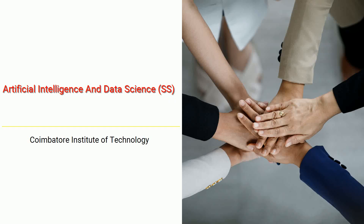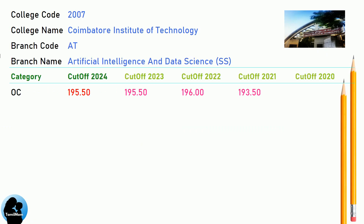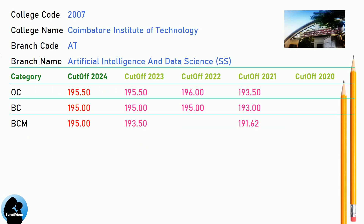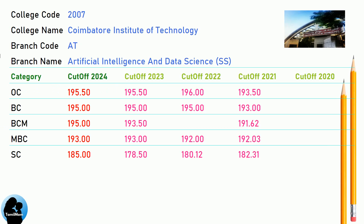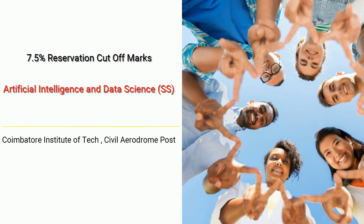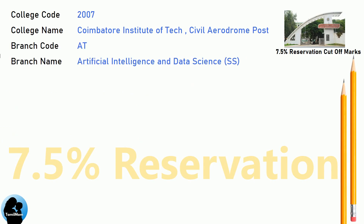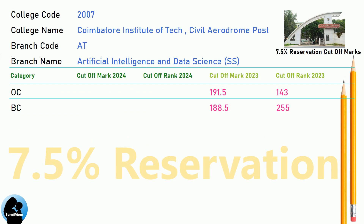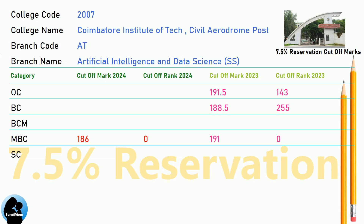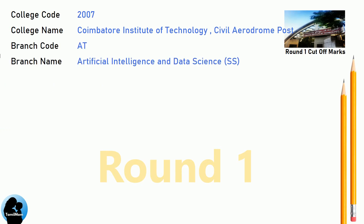DNA Cut-Off for Coimbatore Institute of Technology in Artificial Intelligence and Data Science. DNA 7.5 Reservation Cut-Off for Coimbatore Institute of Technology in Artificial Intelligence and Data Science. DNA Round 1 Cut-Off for Coimbatore Institute of Technology in Artificial Intelligence and Data Science.